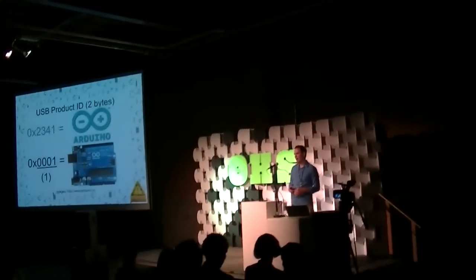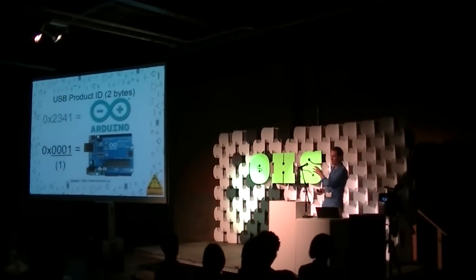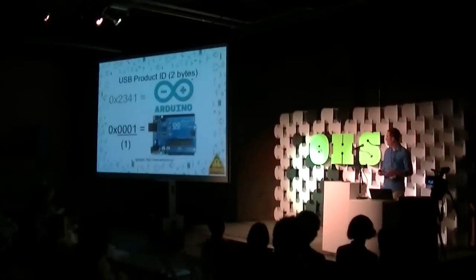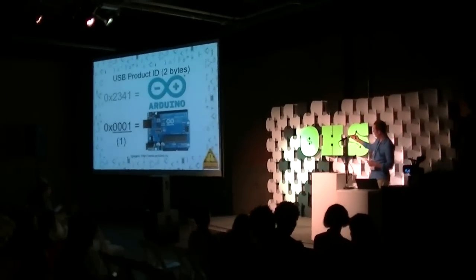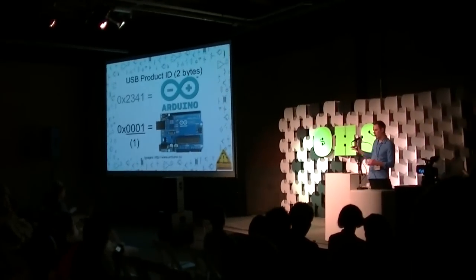The second part is the product ID, and this tells us what product from that manufacturer we're actually dealing with. In the case of Arduino, ID number one is the Arduino Uno.